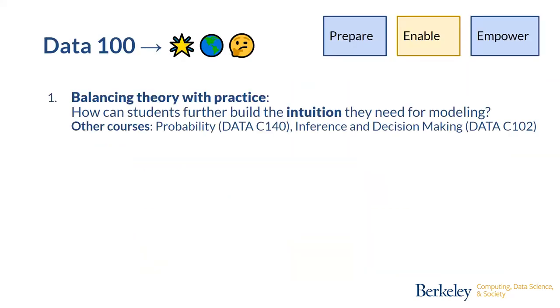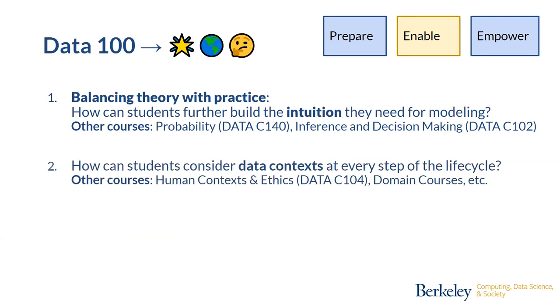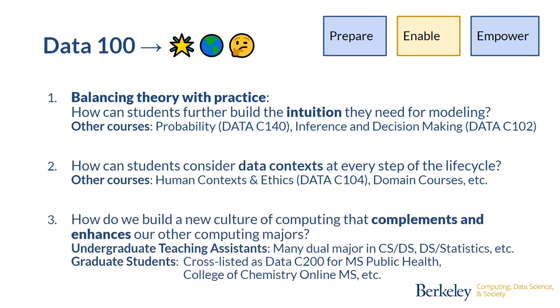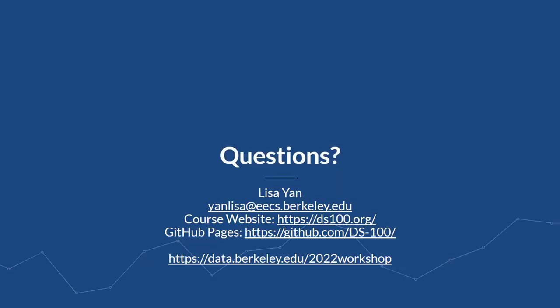So what's next? Well, we would love to balance theory and practice. And so with that comes other courses, probability, inference and decision making. We'd also like students to consider the data context. So this course is really about the real world applications and the real world tools and that sort of engineering and statistical lifecycle. Other courses like human context and ethics and the domain emphasis courses do teach a lot of that context that students would need once they graduate UC Berkeley. And how do we build a new culture of computing that complements and enhances our other computing majors. This is mostly through the teaching assistants that we have, as well as the graduate students that take our course. And so with that, I'll close. Thank you very much. It's exactly 12 o'clock. I did it.